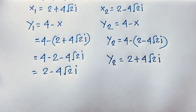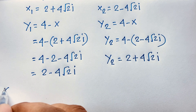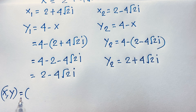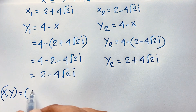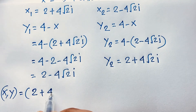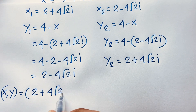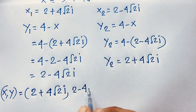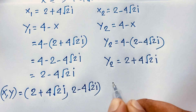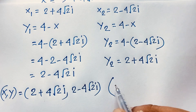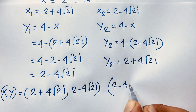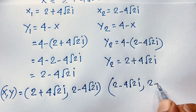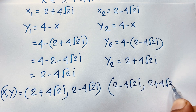So we find out our solutions: when x equals 2 plus 4 square root 2 i, then y equals 2 minus 4 square root 2 i. And when x equals 2 minus 4 square root 2 i, then y equals 2 plus 4 square root 2 i. This is our answer in this math problem.